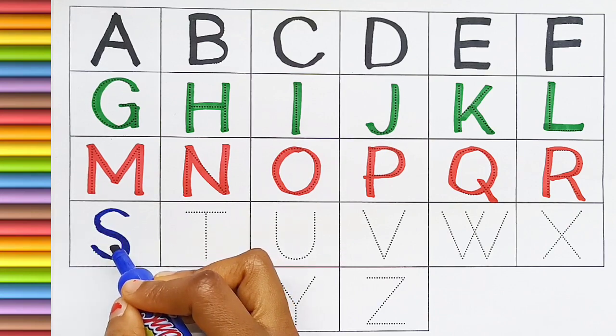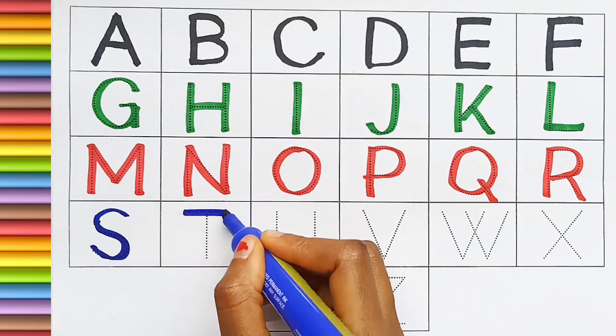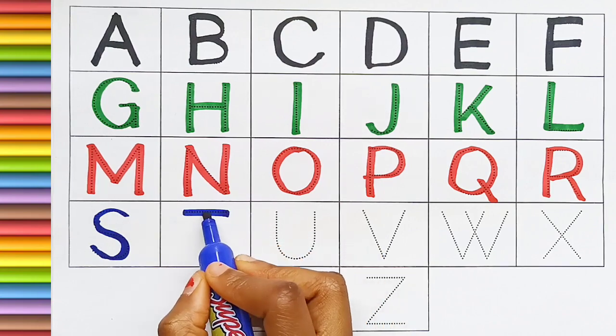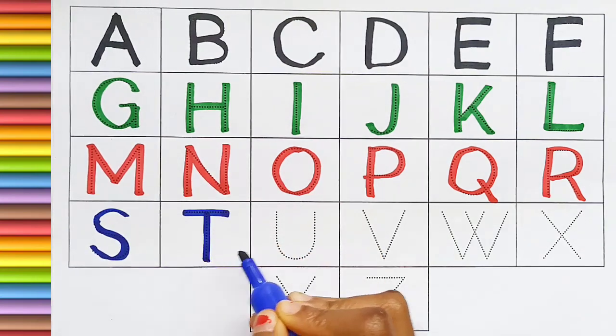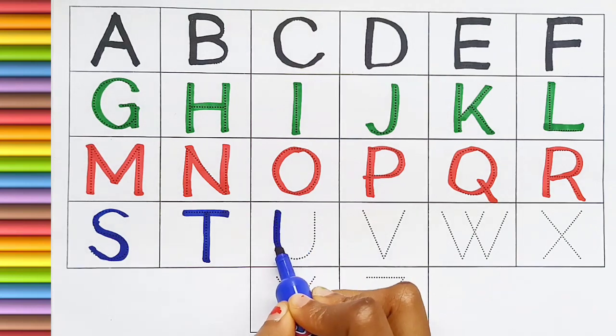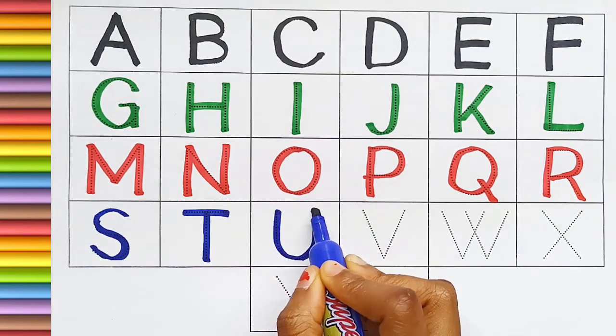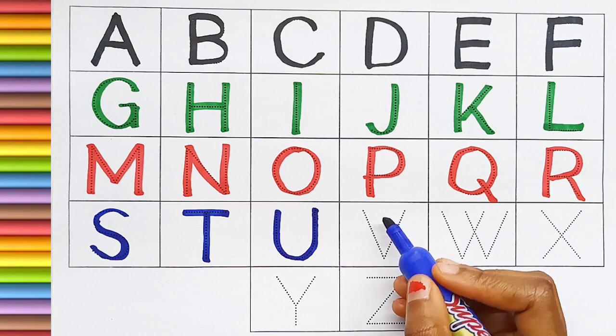S for Scissors. T for Table. U for Umbrella.